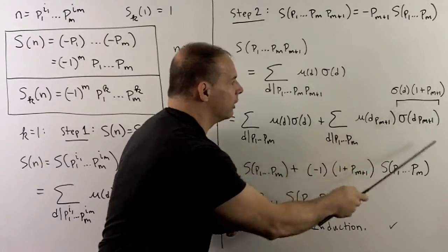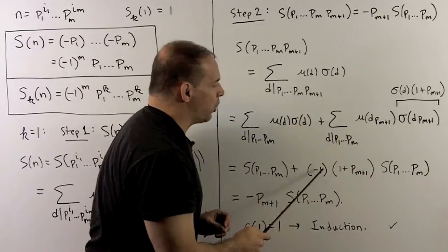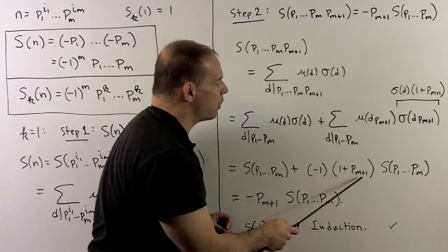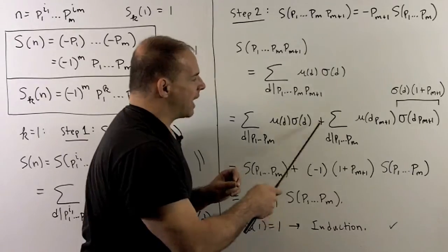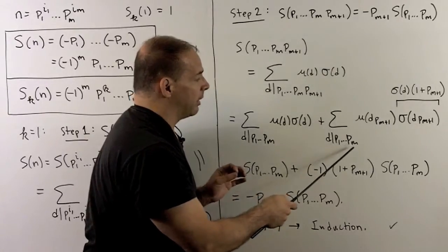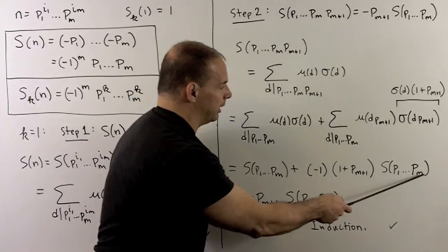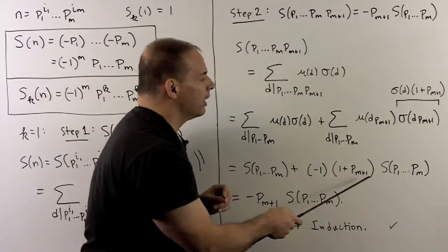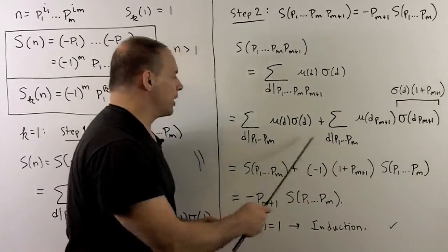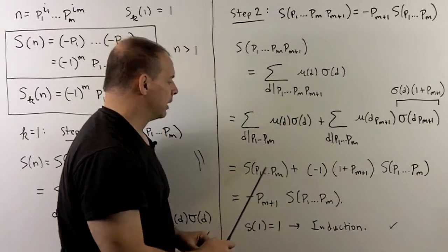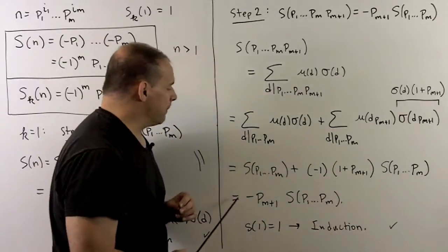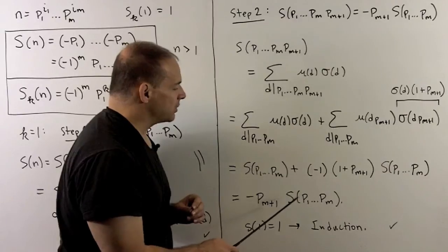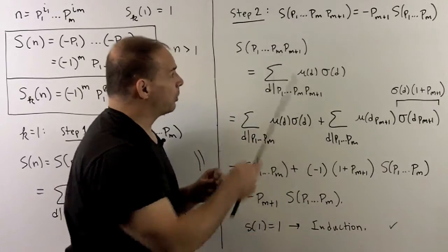Now we put that all together. That's going to give me a minus 1, a 1 plus pn plus 1. Then what's left over is just going to be the sum over the divisors of p1 through pn. So that's going to give me S p1 through pn. Note, S of p1 through pn is what I also have with this sum.